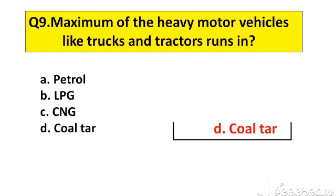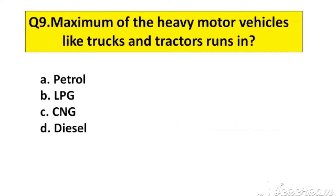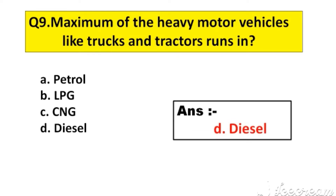Question number 9. Maximum heavy motor vehicles like trucks and tractors run on option A: Petrol, B: LPG, C: CNG, D: Diesel. The right answer is option D: Diesel.